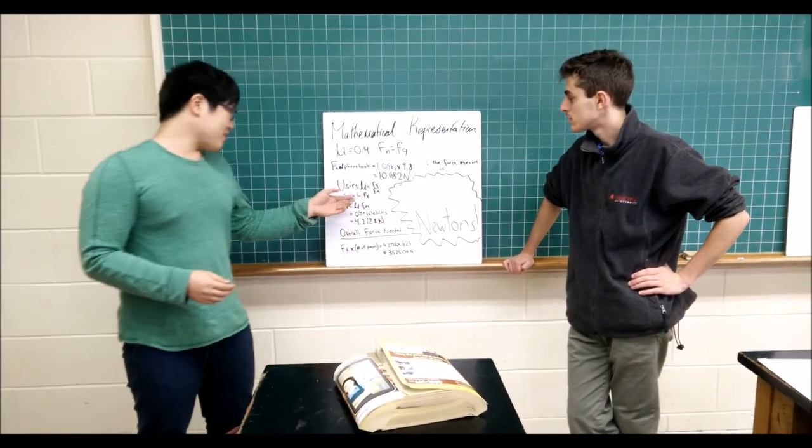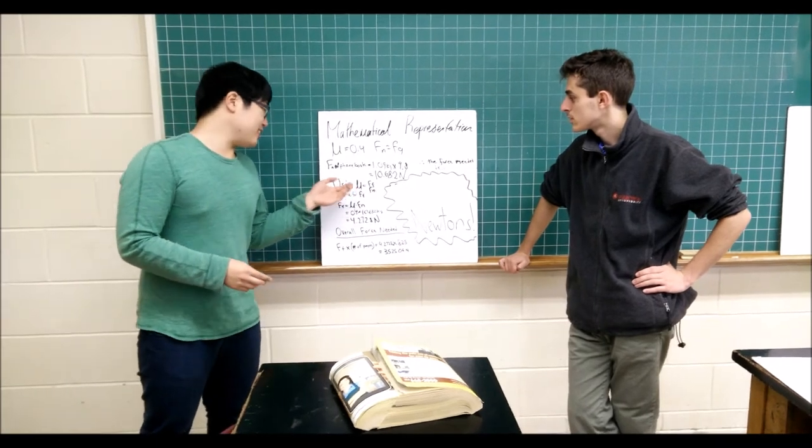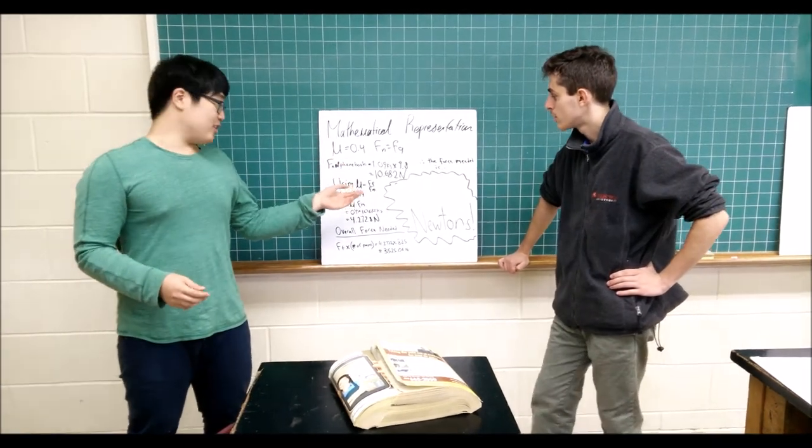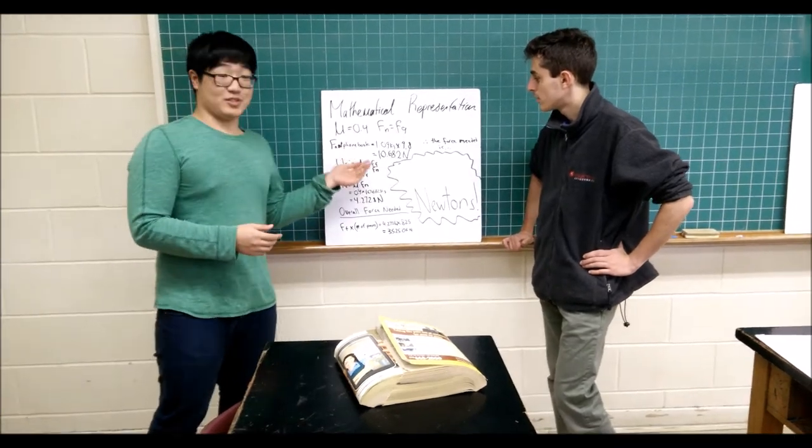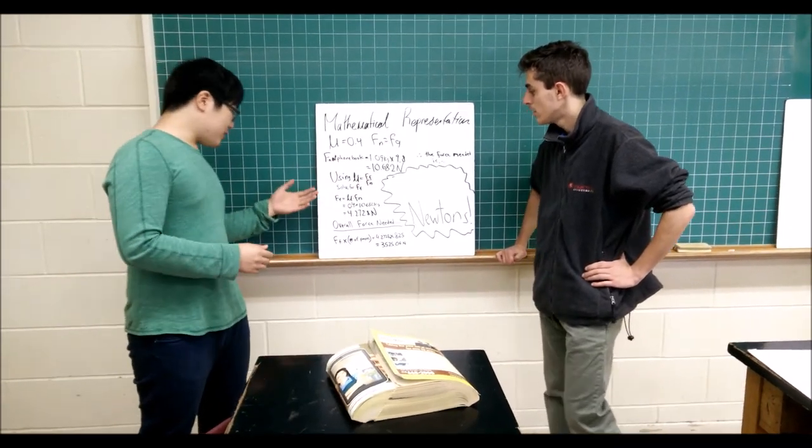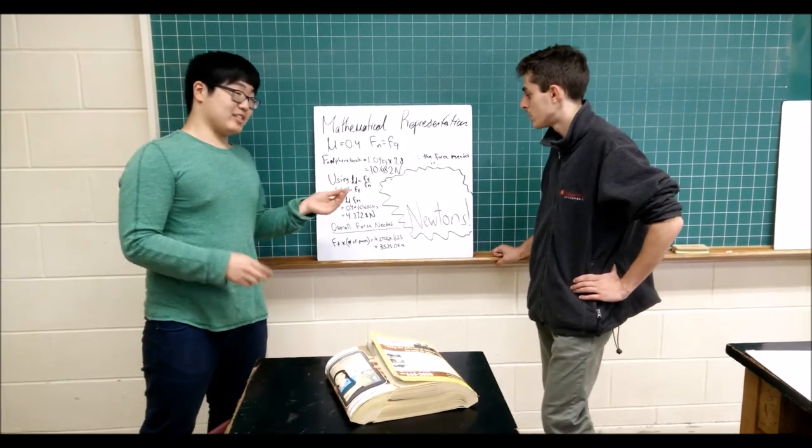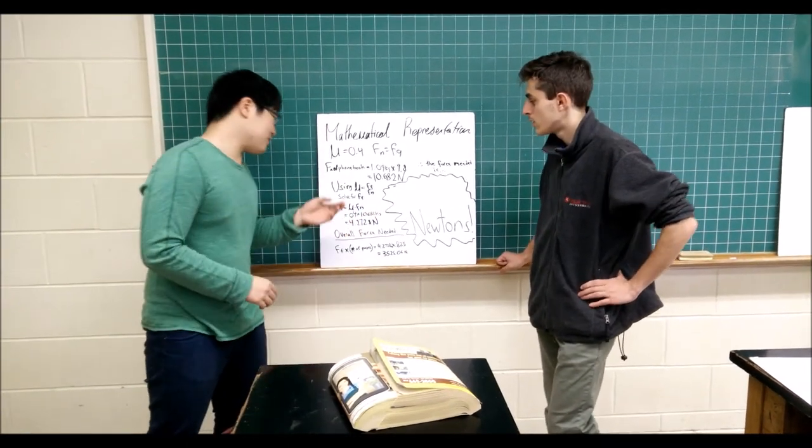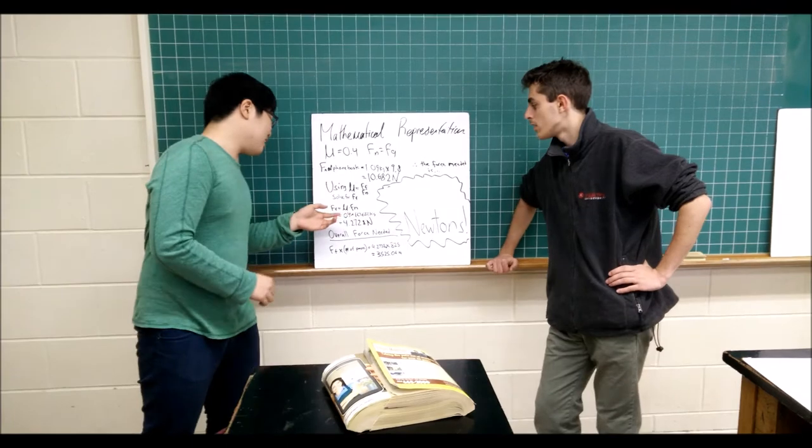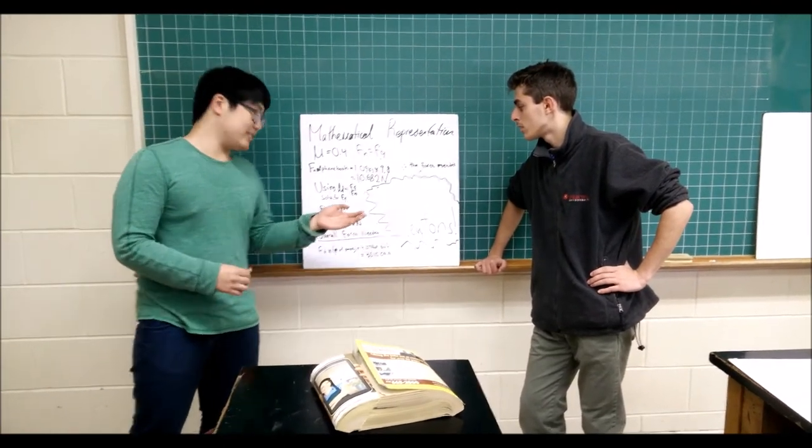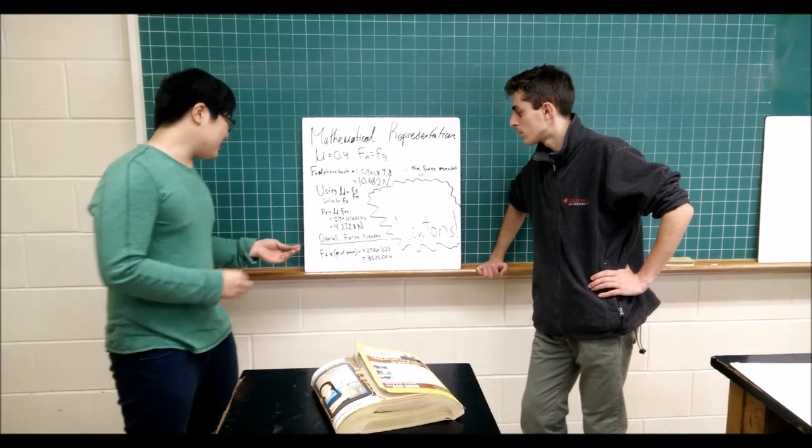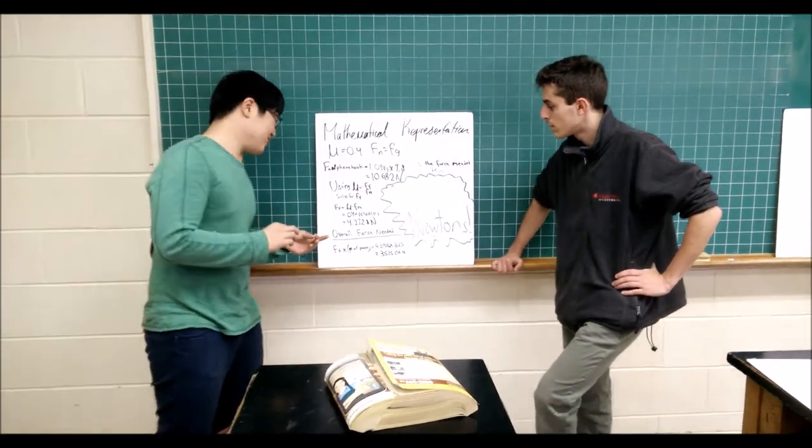So, using the coefficient of friction equals force of friction over normal force, we can solve for the force of friction. So, the force of friction equals coefficient of friction times the normal force. We just rearrange that. And it goes to 0.4 times 10.682 kilograms, which equals 4.272 Newtons.